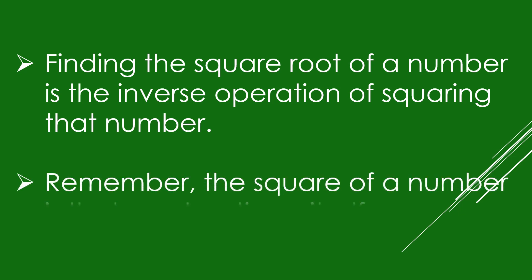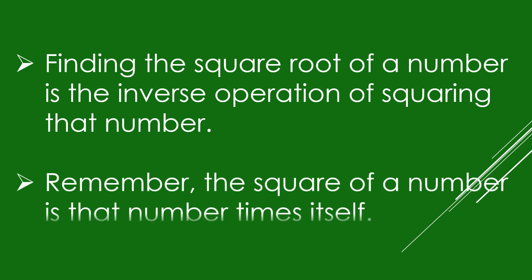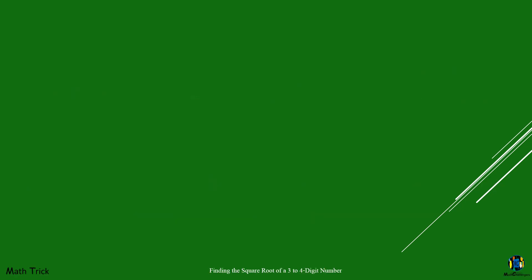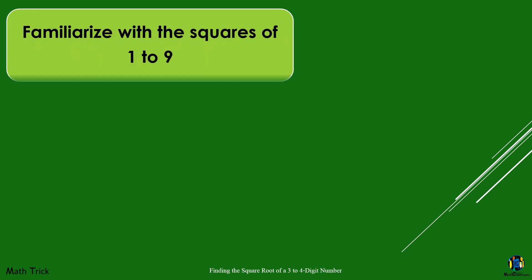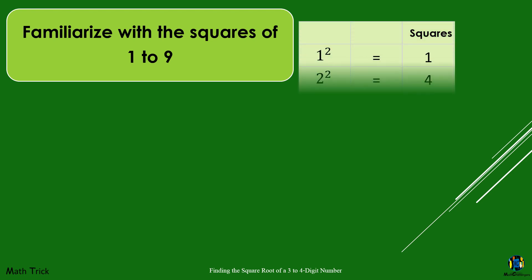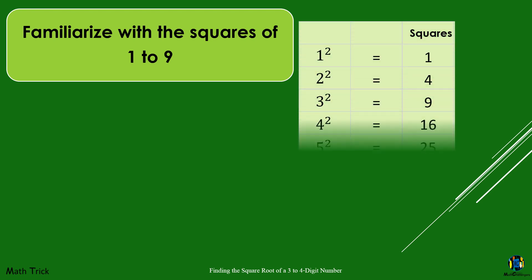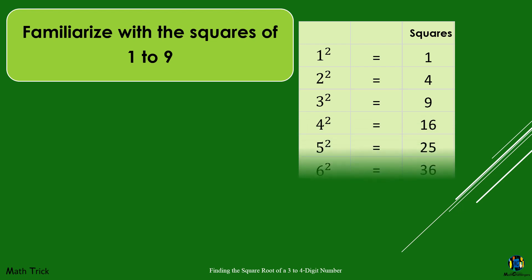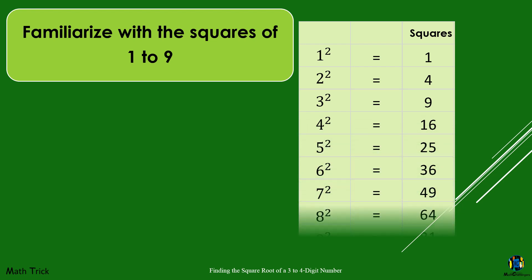Remember, the square of a number is that number times itself. The perfect squares are the squares of the whole numbers. To find the square root, it's important that you are familiar with the squares of 1 up to 9. The squares of the first 9 natural numbers are: 1, 4, 9, 16, 25, 36, 49, 64, and 81.